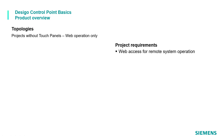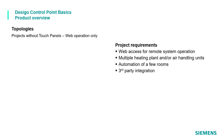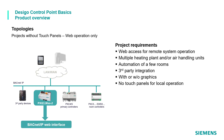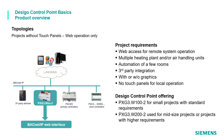A project that requires web access for remote system operation, multiple heating plants and/or air handling units, automation of a few rooms, third-party integration with or without graphics, and no touch panels for local operation — for small projects with standard requirements, DCGO Control Point offers the web server PXG3W100-2. For mid-sized projects with higher requirements, the advanced PXG3W200-2 is the perfect product.